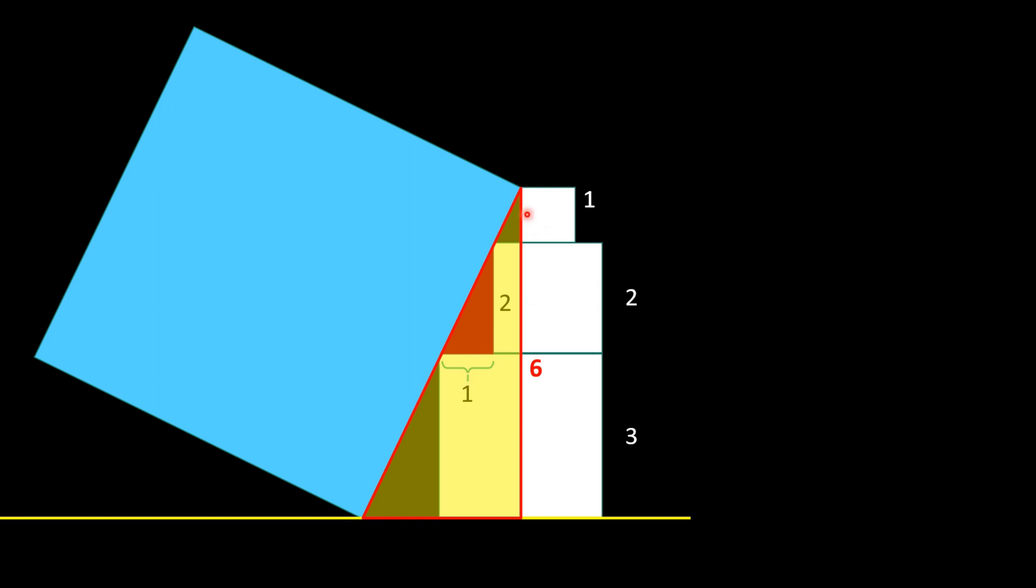So if the perpendicular of a smaller triangle is twice the length of its base, then same will be the case for the larger triangle. So if its perpendicular is 6, then its base will be of length 3. So let's write 3.